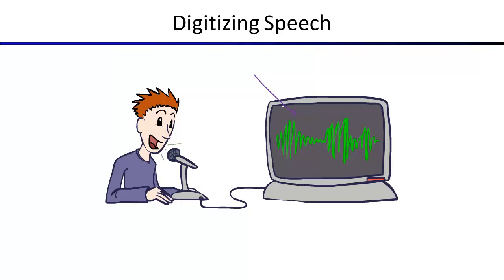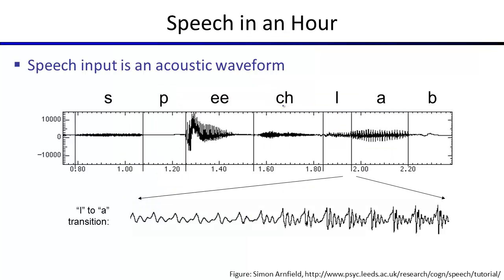The sounds in speech don't behave the way you might intuitively expect. The 's' sound is relatively high-frequency noise, and you can see an irregular but fast pattern during that sound. The 'p' sound, however, is actually complete silence — when you close your lips to make a 'p' nothing happens, so what you think of as the sound 'p' is acoustically identical to any other silence. The reason it sounds like a 'p' to you is that it impacts the following vowel.